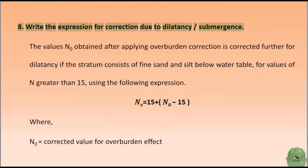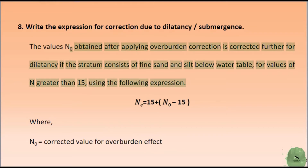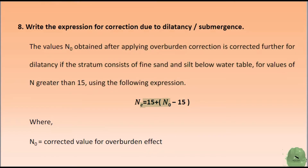Write the expression for correction due to dilatancy submergence. The value N₀ obtained after applying overburden correction is corrected further for dilatancy if the stratum consists of fine sand and silt below the water table. For values of N greater than 15, using the following expression: N equals 15 + 0.5(N₀ - 15), where N₀ equals the corrected value for overburden effect.